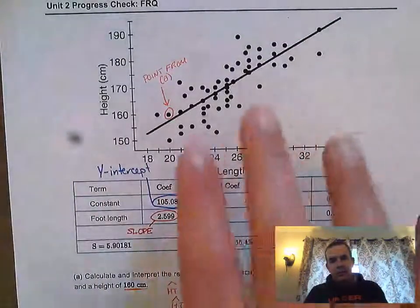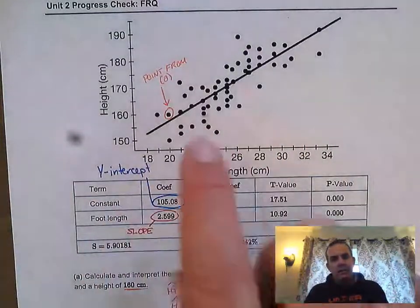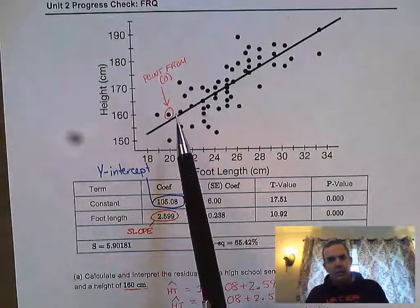They gave us this scatter plot with a data output table. They're asking us to look at this dot right here—a 20 centimeter foot length and 160 centimeter height—and figure out what the residual is.